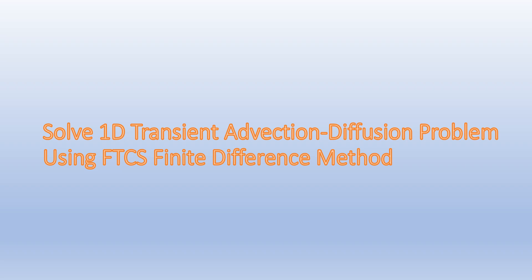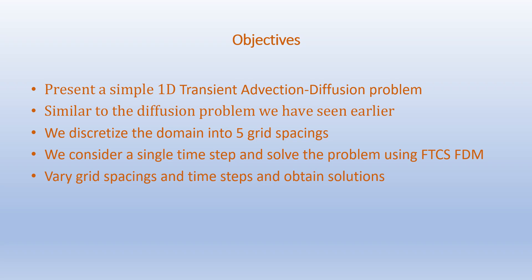Hello everyone. Today we are going to solve a 1D transient advection-diffusion problem using FTCS, or Forward Time Centered Space, finite difference method. Our objectives are to present a simple 1D transient advection-diffusion problem. This problem is very similar to the diffusion problem we have seen earlier, but we have an extra term for the convection part. We will discretize the domain into five grid spacings and consider a single time step.